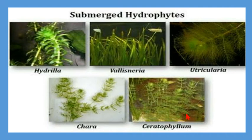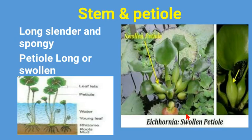Now let's talk about the morphology of hydrophytes. First, we're going to discuss stem and petiole. The stem is long and slender, and in some cases the petiole is also long, like in Marsilea, which has a long slender petiole. Whereas in Eichhornia, the petiole is swollen.